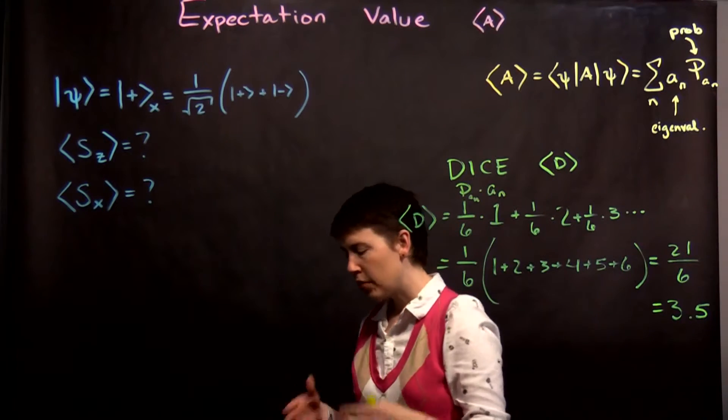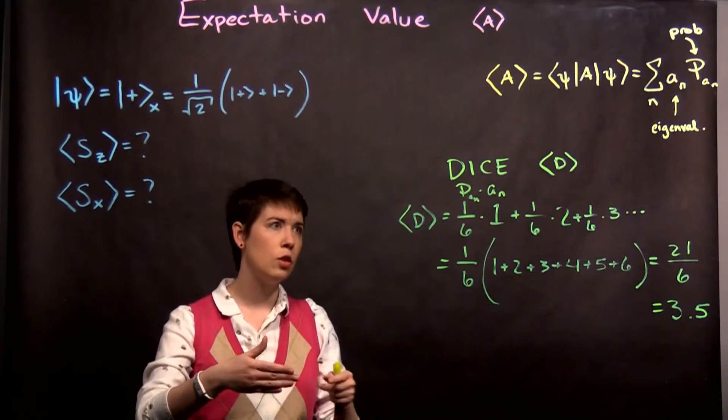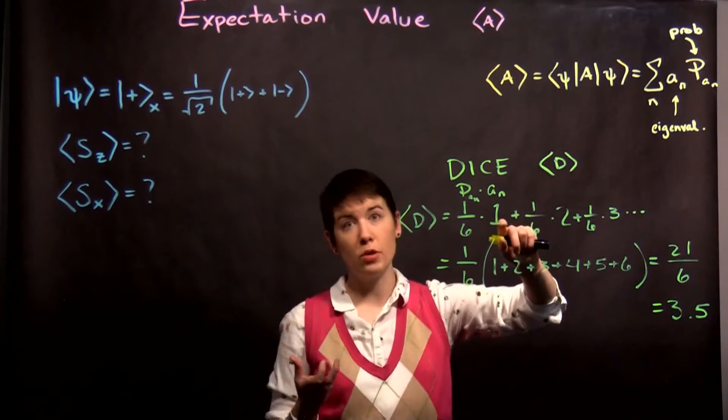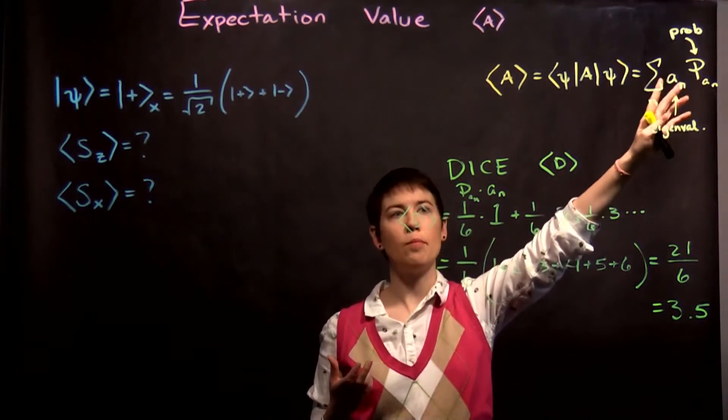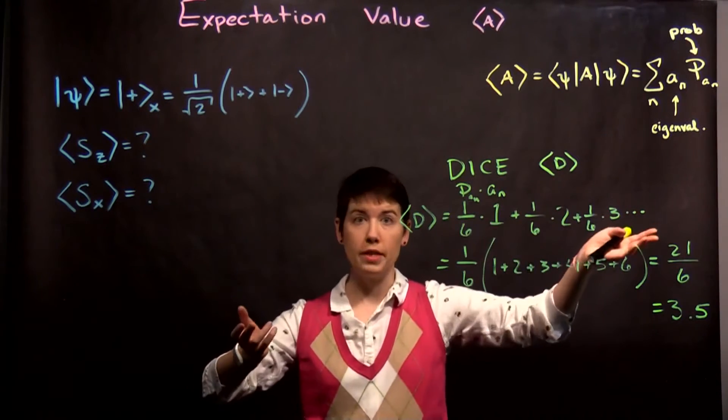what we've done is we've summed over every possible value. And in our quantum state, every possible measurement corresponds to an eigenstate and an eigenvalue. So where here it was 1, that in our quantum state would be our measurement value, which is the eigenvalue. Then you multiply that by the probability and sum up over all of the possible ones.